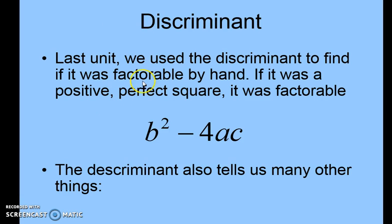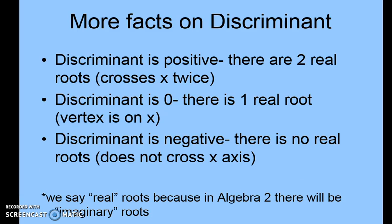Now, the discriminant. The discriminant b² minus 4ac tells us how many roots we have. If the discriminant is positive, there are two real roots — the parabola crosses the x-axis twice. If the discriminant is zero, there is one real root — the vertex is on the x-axis. If the discriminant is negative, there are no real roots — the parabola does not cross the x-axis. We say 'real roots' because in Algebra 2 we will learn about imaginary roots.